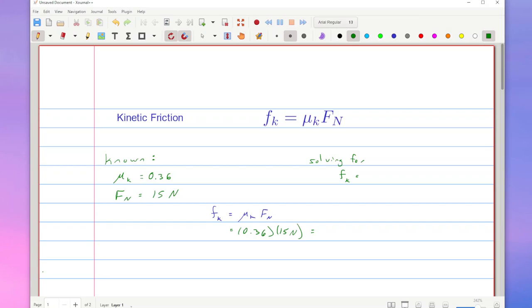And when you plug those into your calculator, you're going to get a value here of 5.4 newtons. So that tells us that the frictional force is 5.4 newtons when I apply a normal force of 15 newtons between two surfaces where their relative coefficient of kinetic friction is 0.36. So this is one example.